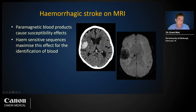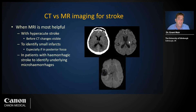Heme is slightly magnetic, so hemorrhage-sensitive sequences on MRI take advantage of this property to provide imaging highly sensitive for blood products. In addition to a large acute frontal lobe hemorrhage, note the many chronic micro-hemorrhages in this patient with amyloid angiopathy — these are not visible on CT. Therefore MRI is especially useful when we need to identify hyper-acute changes not yet visible on CT, changes too small for CT, and to identify micro-hemorrhages supporting a diagnosis of amyloid angiopathy.